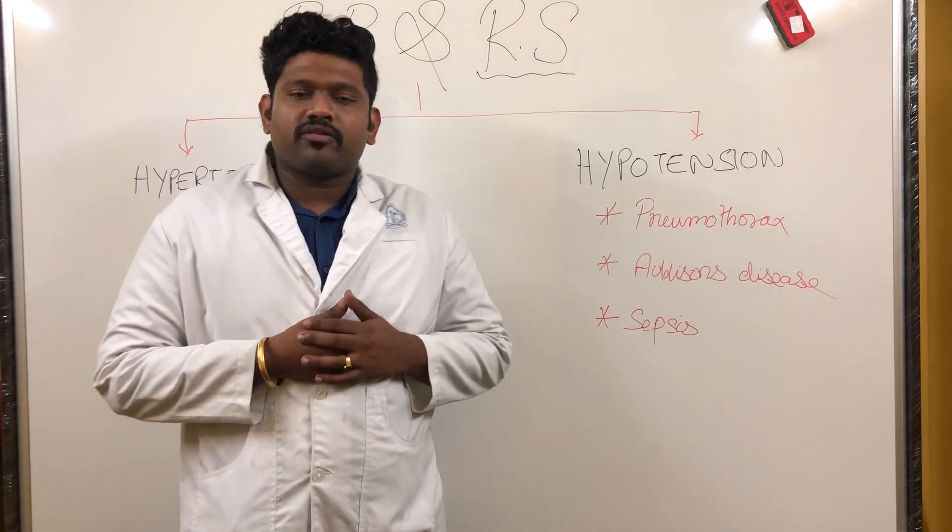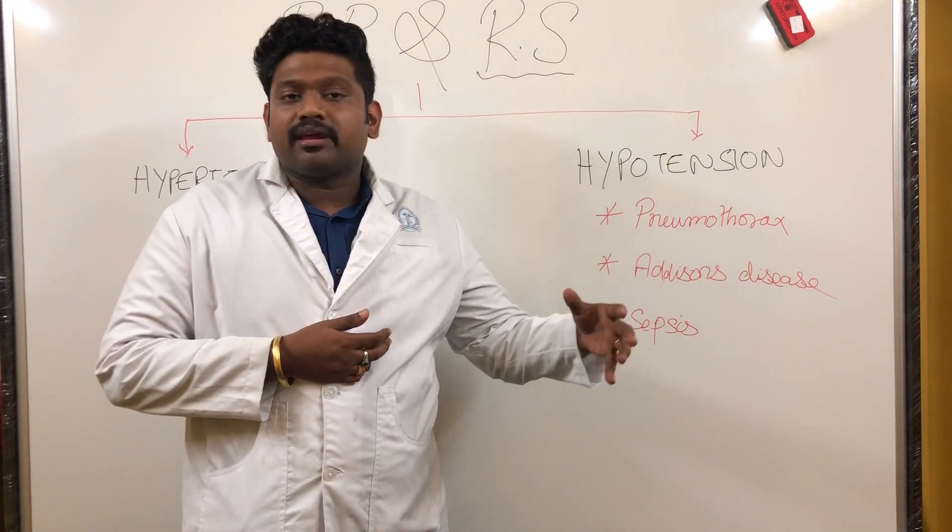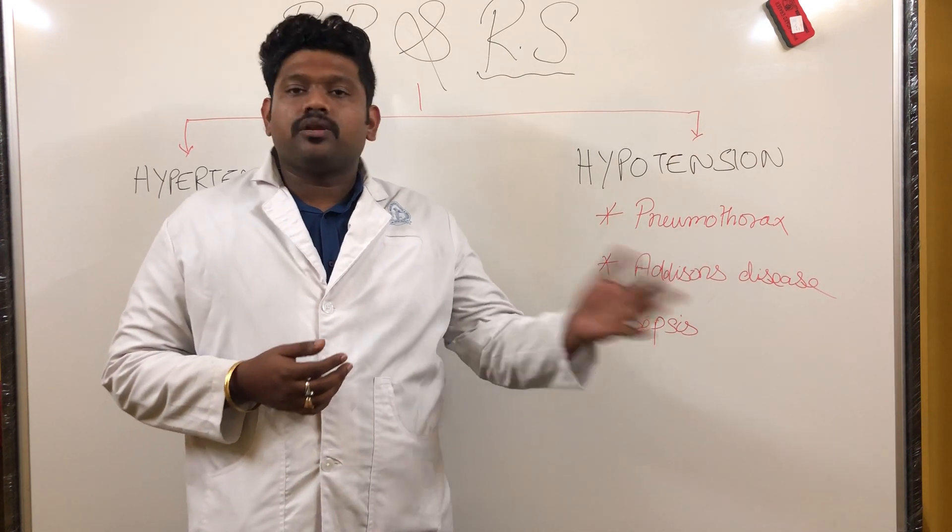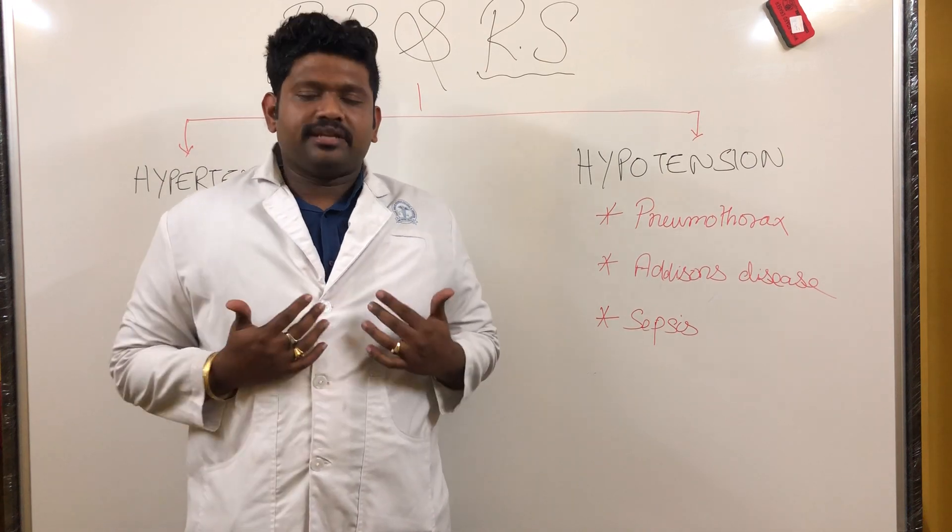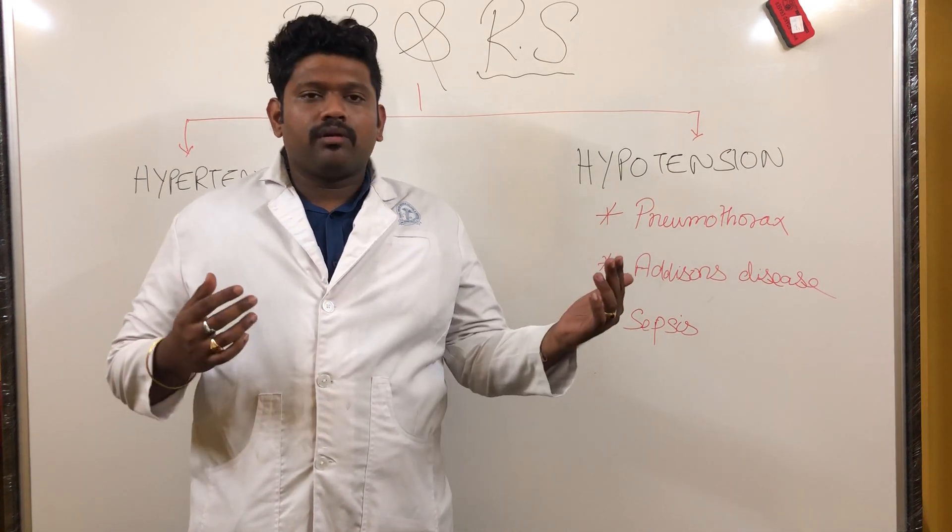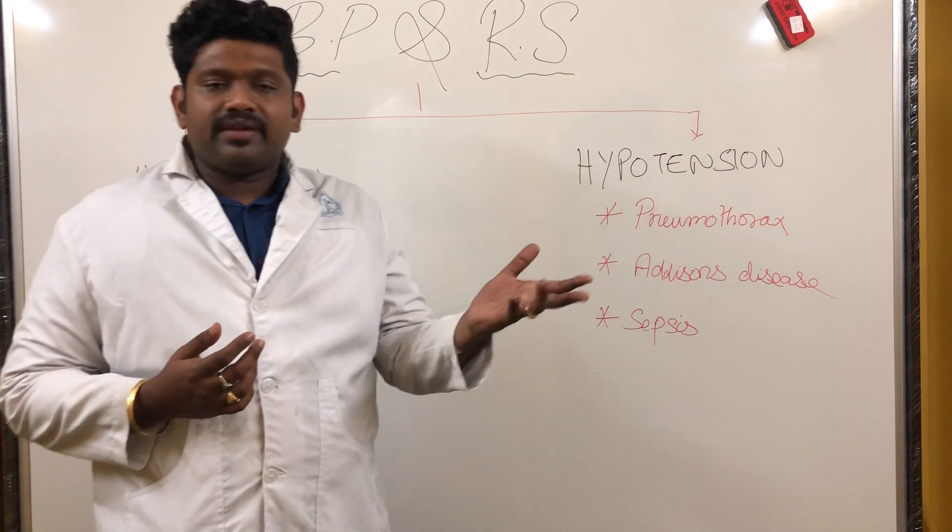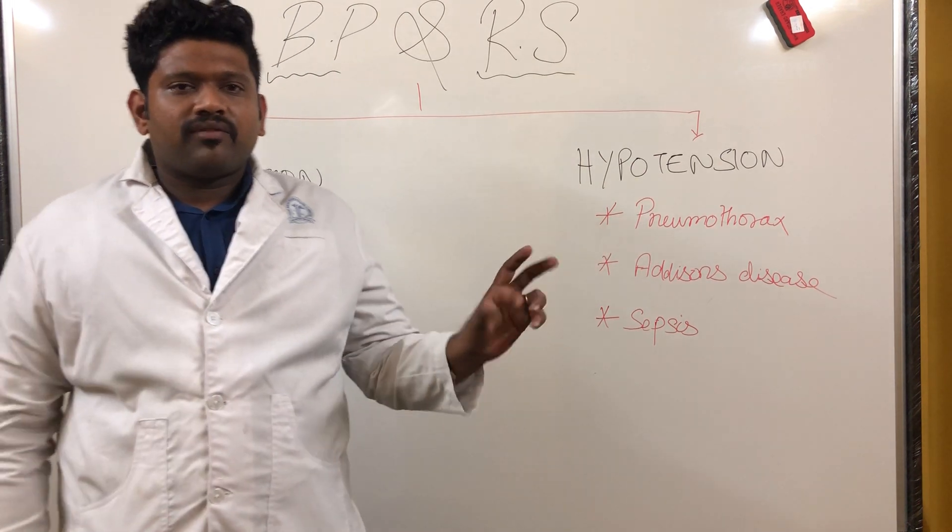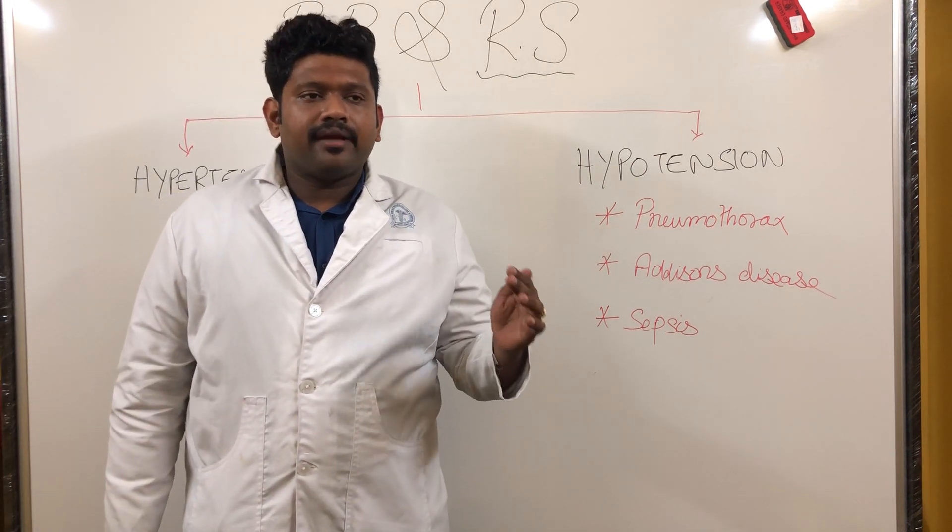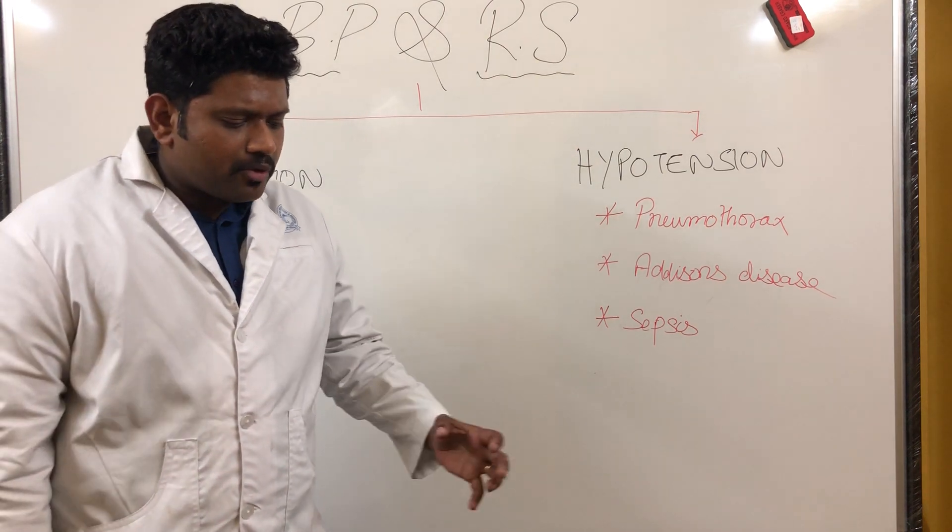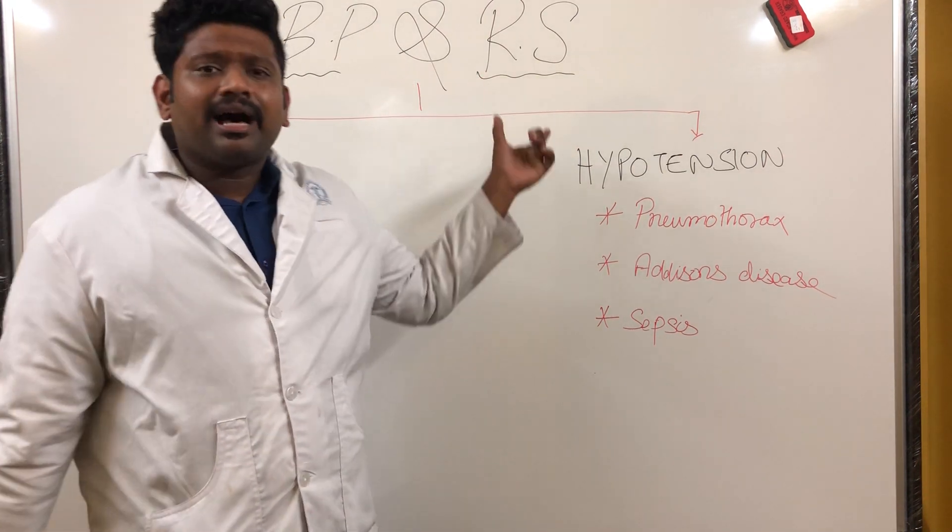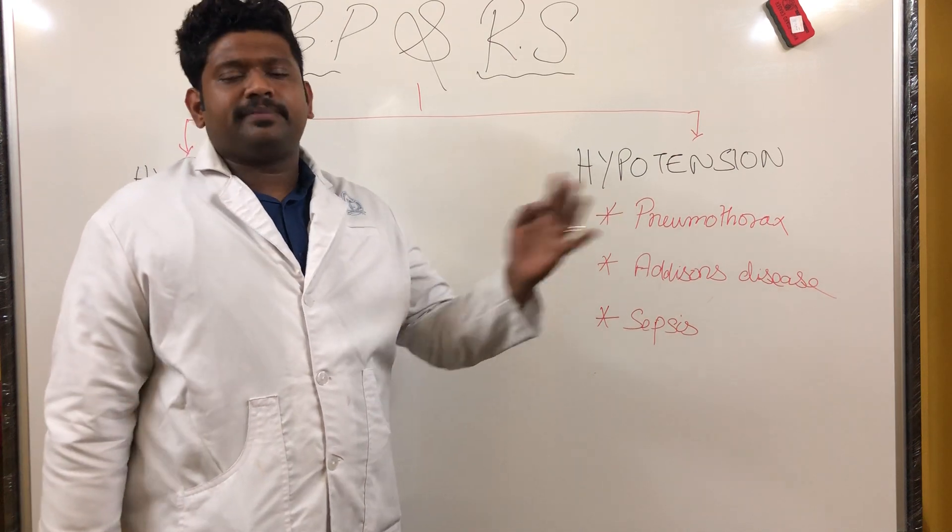We all know what blood pressure is. If you're examining a patient, we say the BP is 120 by 80 - systole 120 and diastole 80 mm of mercury, measured in the right upper limb in sitting posture or right lower limb in lying posture. We have to mention where you're measuring it and in what position. Now I'm going to discuss BP and RS - blood pressure and respiratory system.